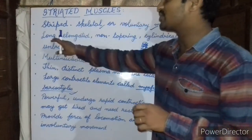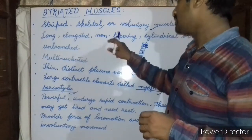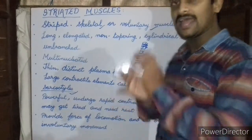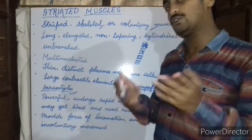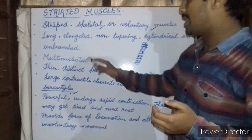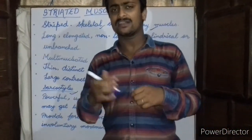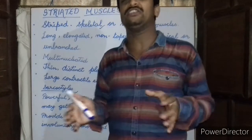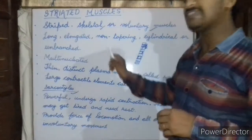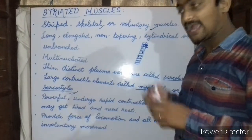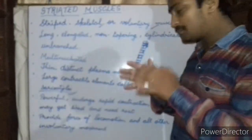These striated muscles consist of long, elongated, non-tapering, cylindrical, and unbranched fibers — they do not consist of branches. These striated muscles consist of many nuclei, and that is why they are called multinucleated. The nucleus is peripheral in position.